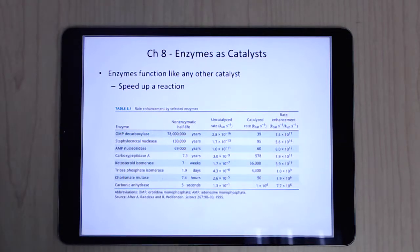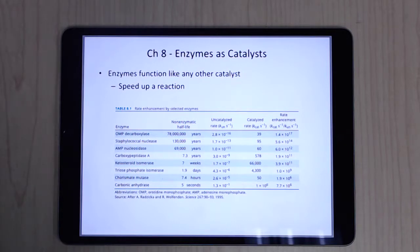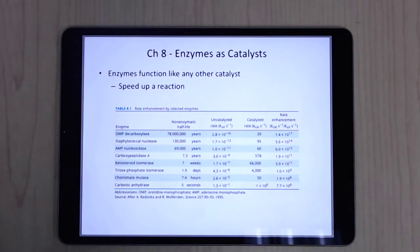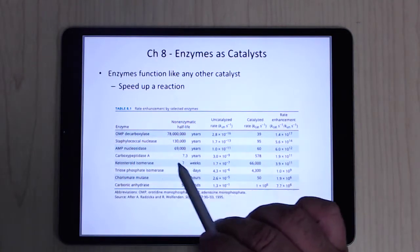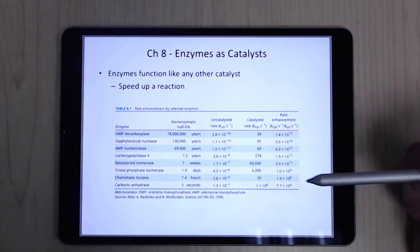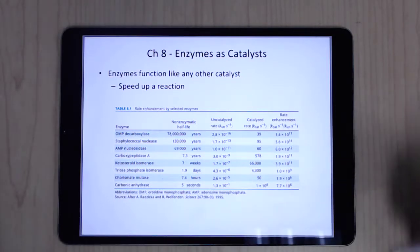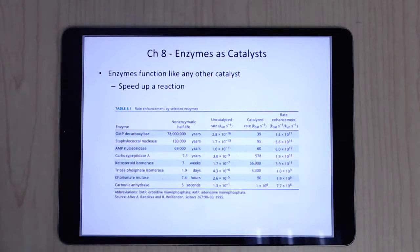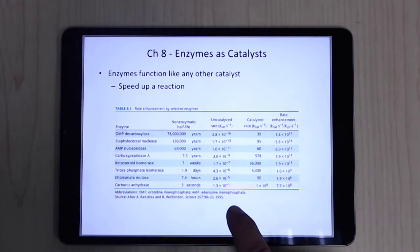Enzymes are like any other chemical catalyst — they just speed up the reaction. It just so happens that they're made out of proteins, but they function no differently than any other chemical catalyst. They do the reaction, they don't get used up, and they can have a pretty dramatic effect on the speed of a reaction. A reaction that may take years to complete can be done in seconds with the use of an enzyme.